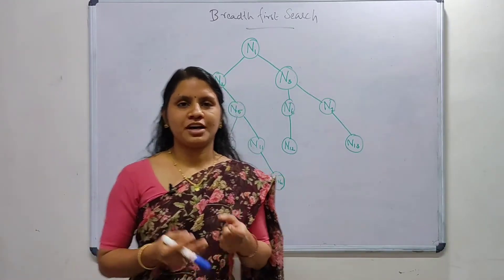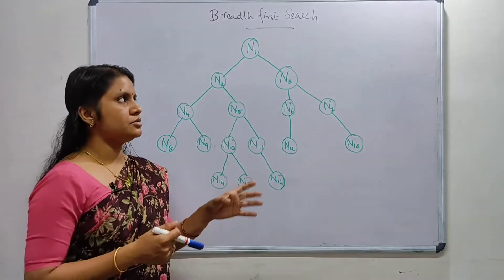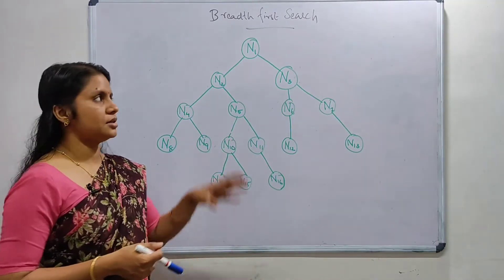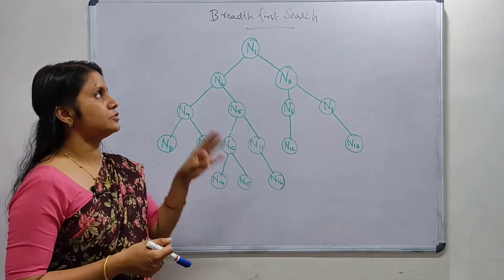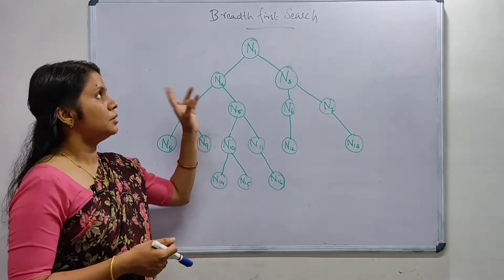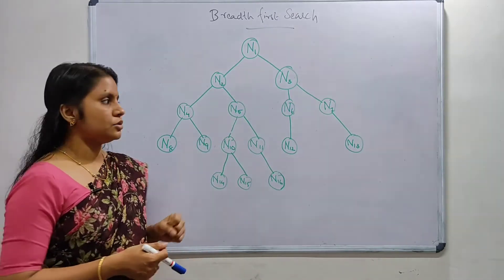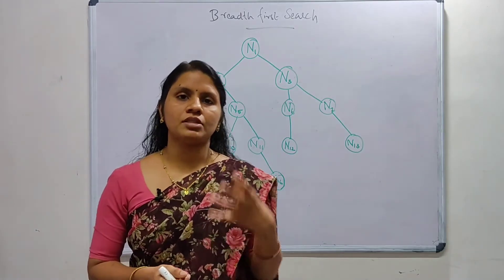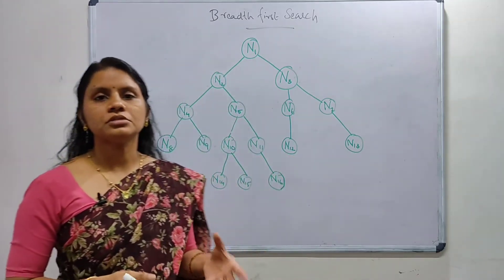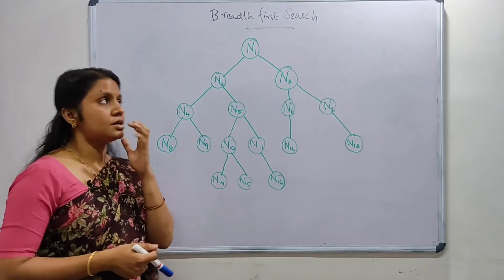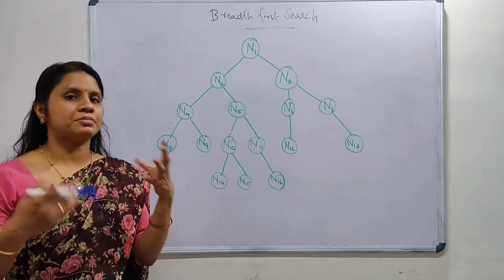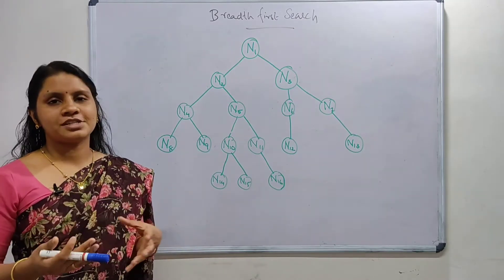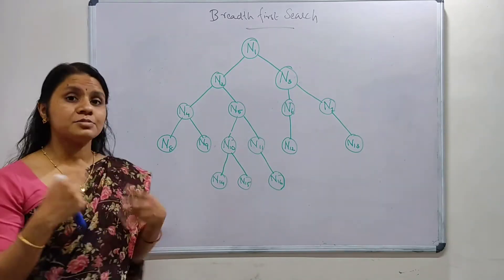Welcome to this video on artificial intelligence. We are going to discuss uninformed search strategies. First, we will discuss breadth-first search. An uninformed search technique is searching without any knowledge or information to reach the objective. This kind of search is also known as blind search, exhaustive search, or brute force algorithm.